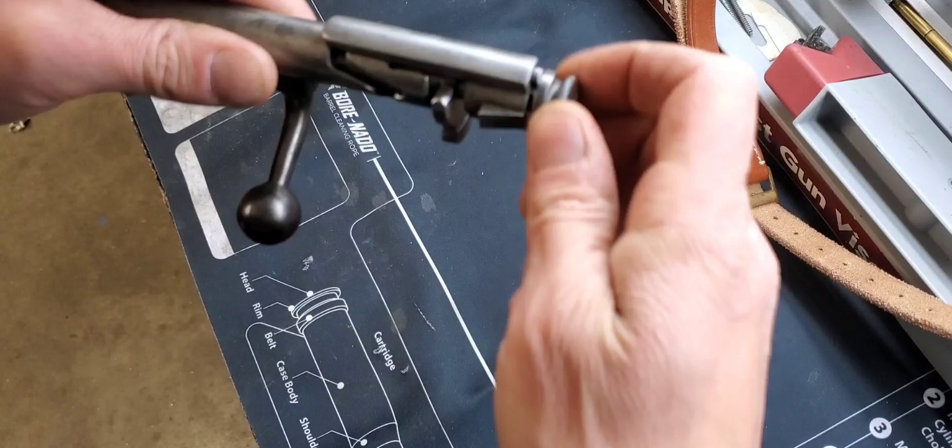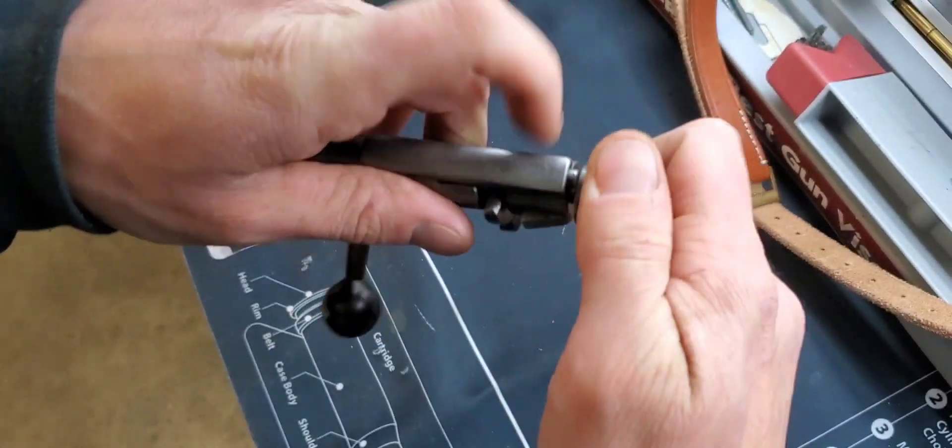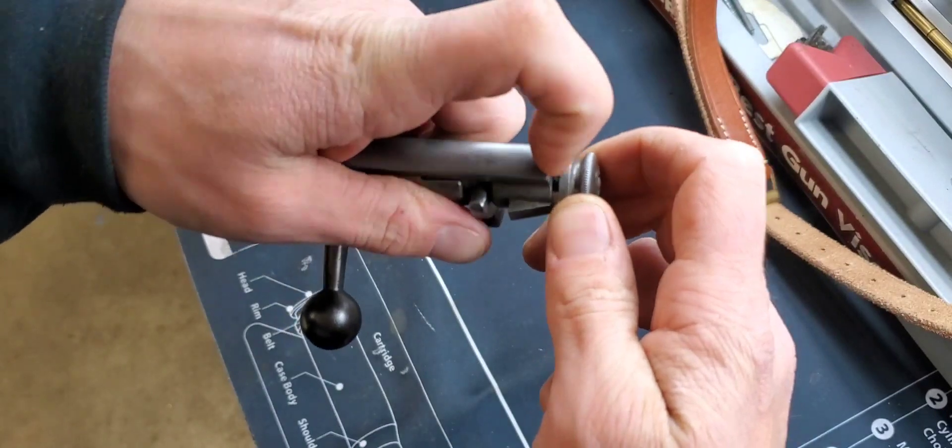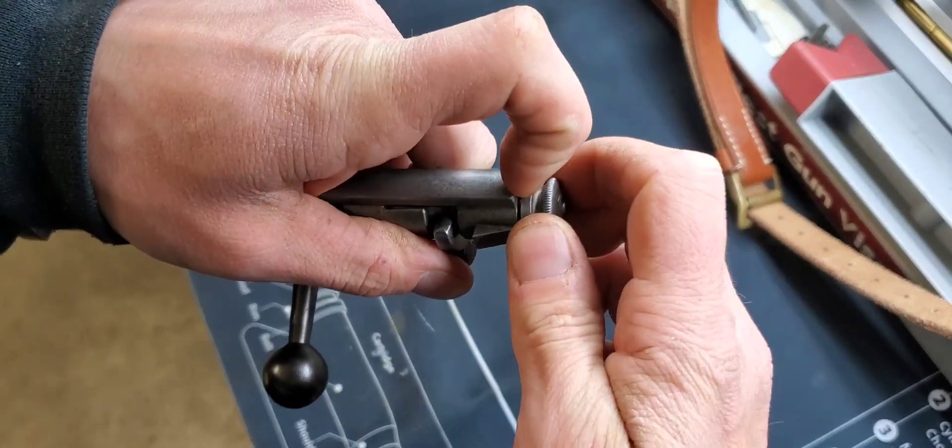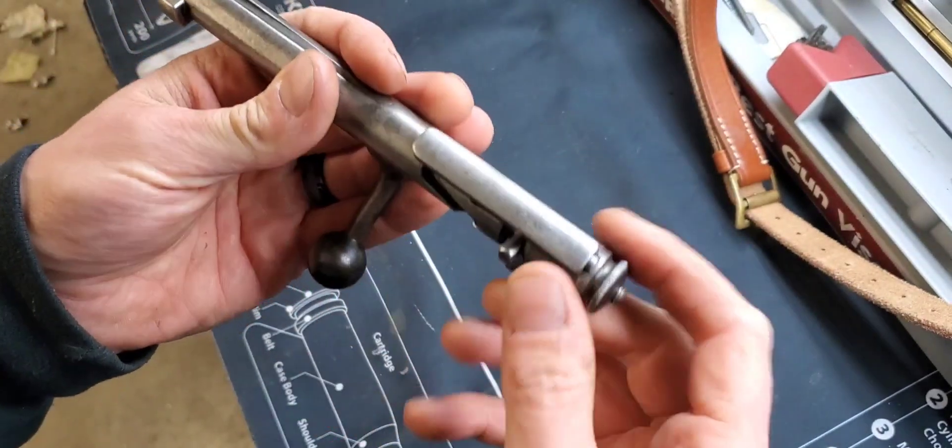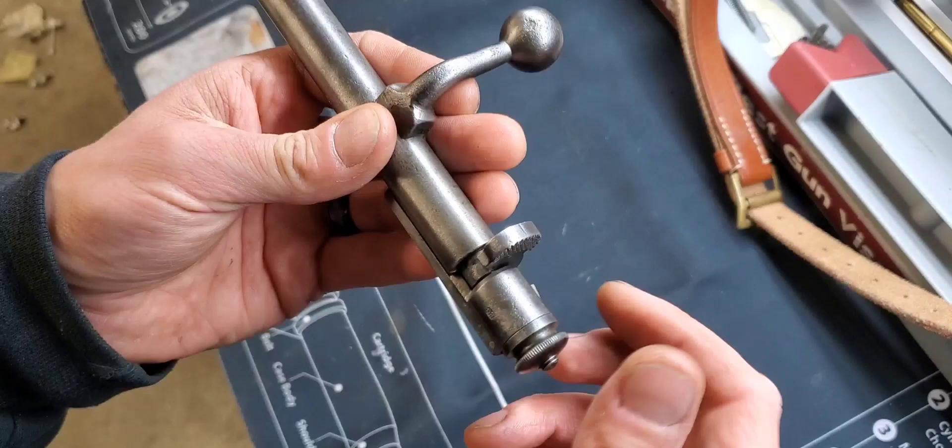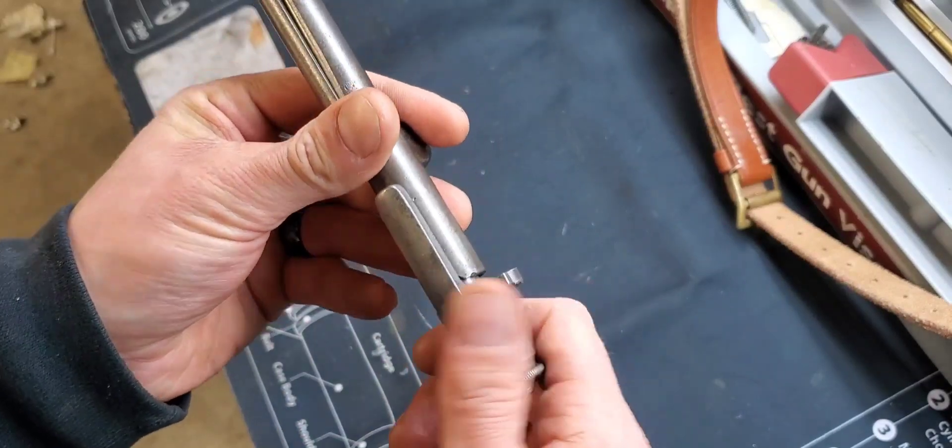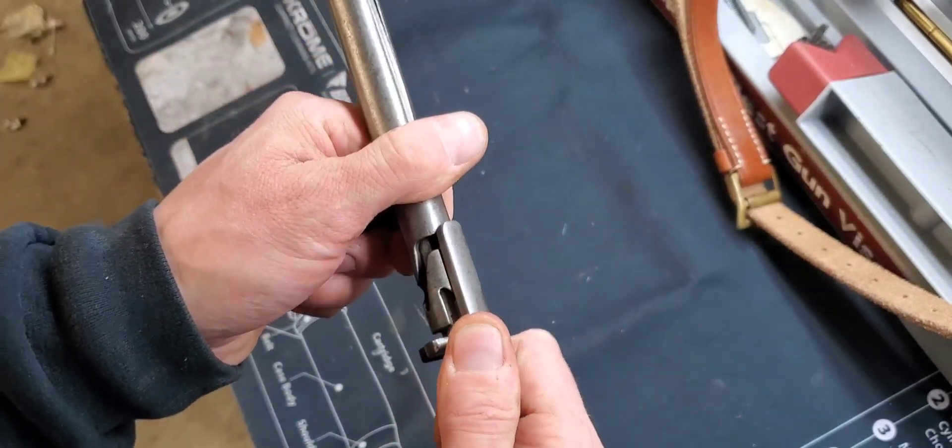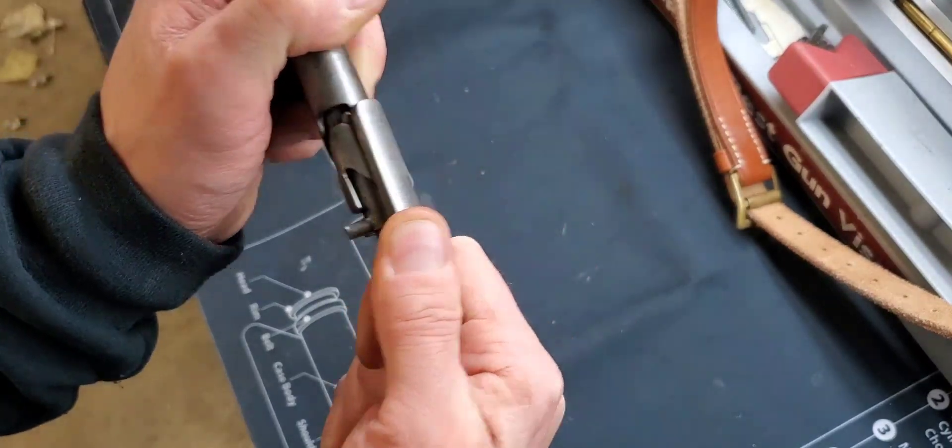You're gonna go ahead and put your knob back on. Make sure that it's all the way down like that. So now when you go and put this back into your rifle, you're gonna want to cock it. So we're gonna go ahead and pull back while turning clockwise.